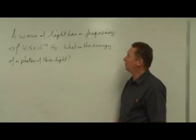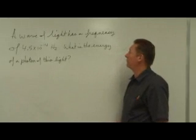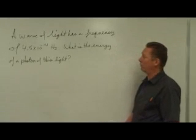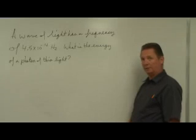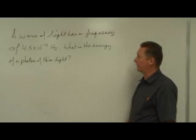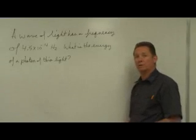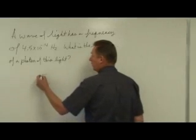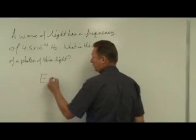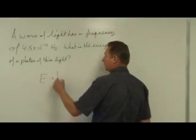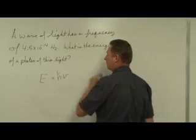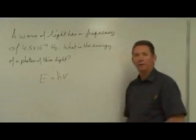Take a look at this problem. It says a wave of light has a frequency of 4.5 times 10 to the negative 14 cycles per second. What is the energy of a photon of this light? You'll remember that the equation is energy equals Planck's constant multiplied by the frequency of light.